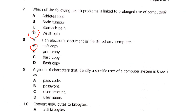Question 9: a group of characters that identify a specific user of a computer system is known as — A: a password, B: a password, C: user account, or D: username. A group of characters that identify a specific user of a computer is known as a password, so the answer is B — password.